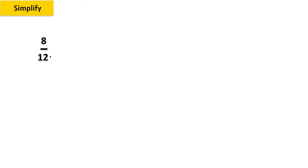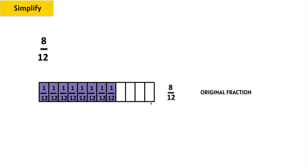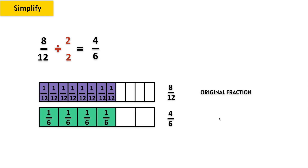Let's simplify 8 twelfths. We have a model of 8 twelfths here. We know that 8 and 12 are divisible by 2, because 4 times 2 is 8 and 6 times 2 is 12. So 8 divided by 2 is 4, and 12 divided by 2 equals 6, giving us 4 sixths. But we're not done simplifying yet, because 4 and 6 have a factor in common — 2 times 2 is 4 and 3 times 2 is 6 — so we divide by 2 again.